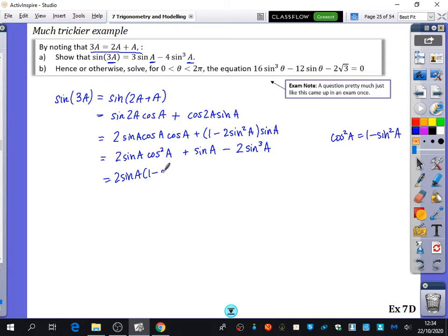So I'm going to say I've got 2sin(a) multiplied by 1 minus sin²(a) plus sin(a) minus 2sin³(a). It looks complex, but it's not as crazy as it looks. It's just expanding and factorising. So that is 2sin(a) minus 2sin³(a) plus sin(a) minus 2sin³(a), which simplifies to 3sin(a) minus 4sin³(a).